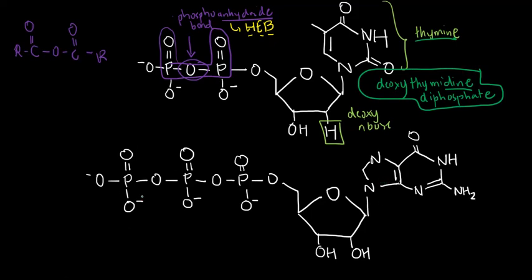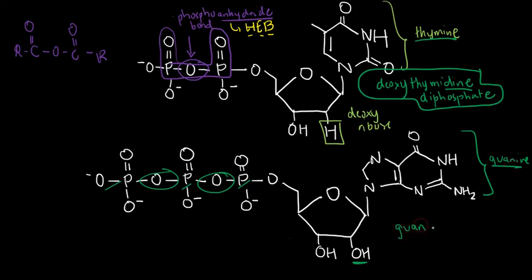For the second structure, the base this time is bicyclic — so obviously it's a purine. This one, with the carbonyl group, is specifically guanine. The sugar, luckily, is ribose, so no 'deoxy' prefix is needed. And I have one, two, three phosphates with two phosphoanhydride bonds — so this is a triphosphate. Assembling all that: guanine becomes guanosine (suffix '-osine' for purines), and with three phosphates it's guanosine triphosphate. Since it's not deoxyribose, no prefix 'deoxy' is needed.